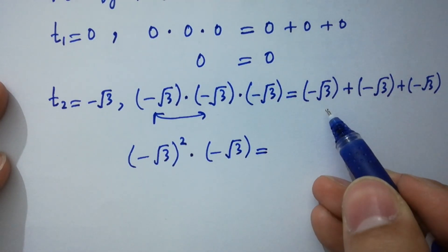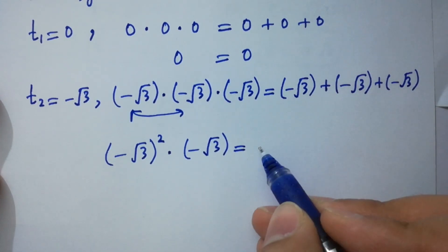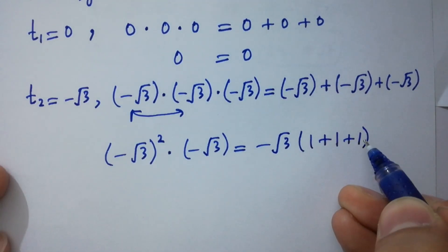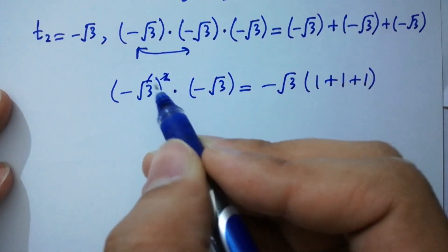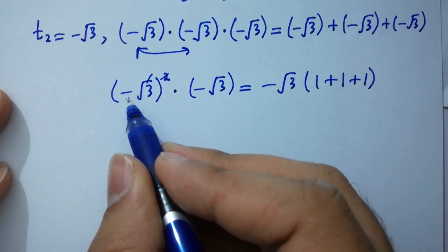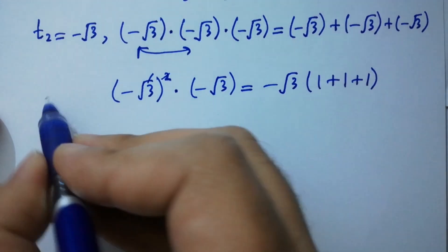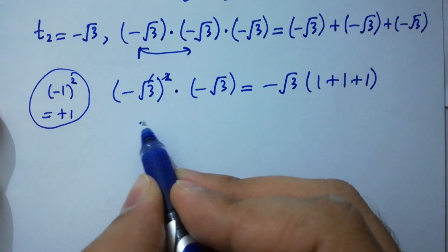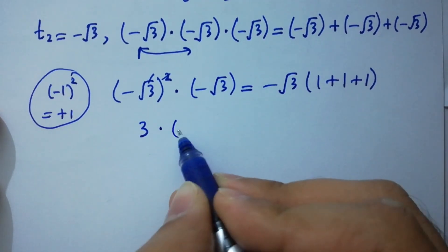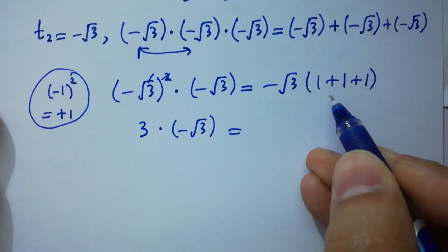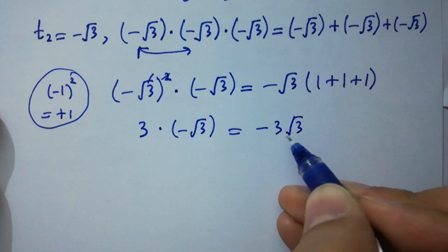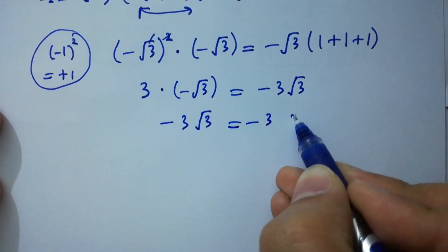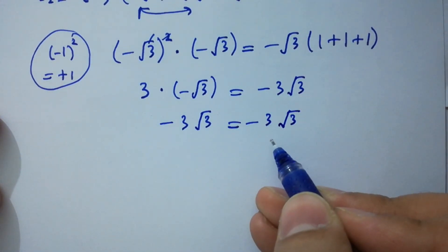Minus square root of 3 can be factored out, giving 1 plus 1 plus 1. The square cancels with the square root. On the left we get minus 3 square root of 3, and on the right minus 3 square root of 3. Left-hand side equals right-hand side.